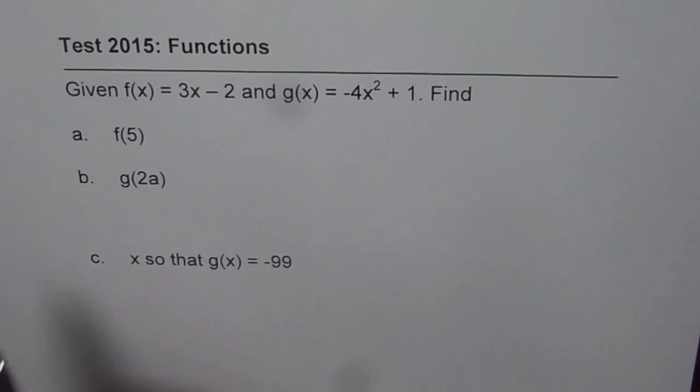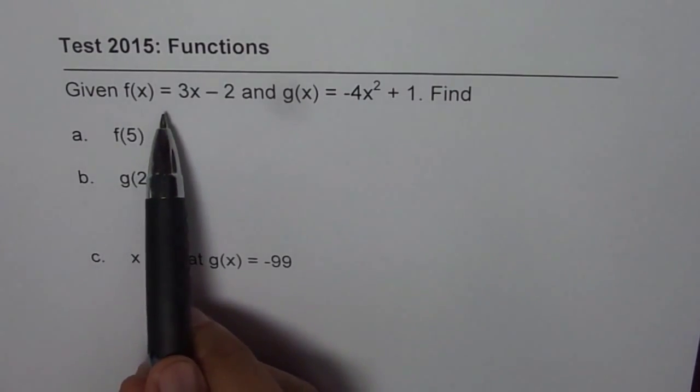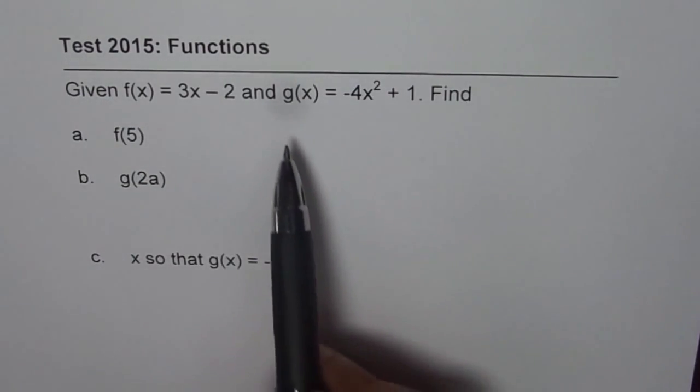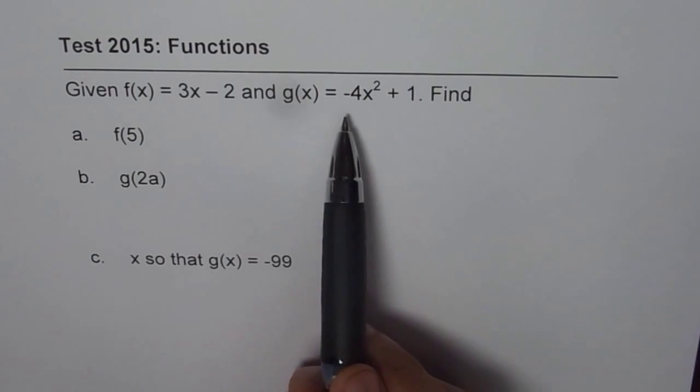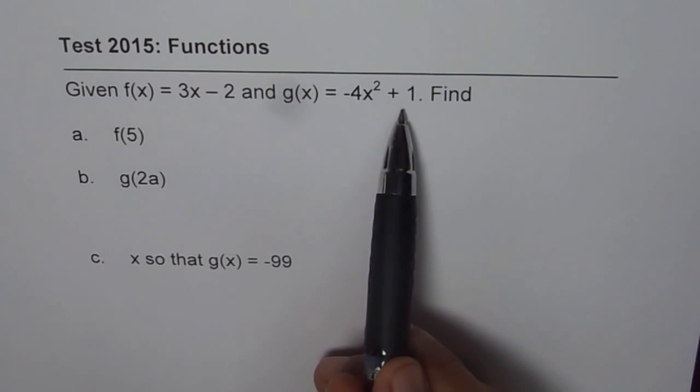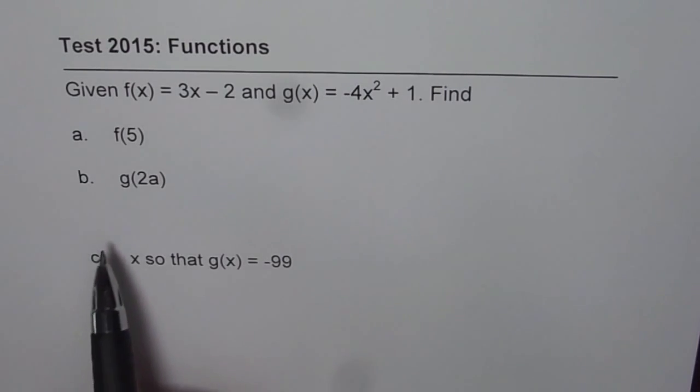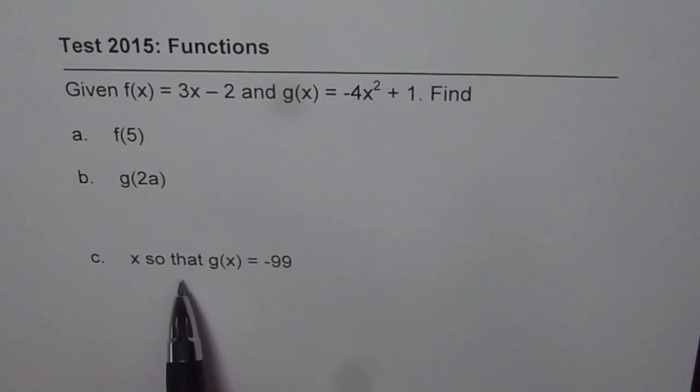The question here is: given f(x) = 3x - 2 and g(x) = -4x² + 1, find f(5), g(2a), and x so that g(x) = -99. So this is grade 11 functions notation chapter.